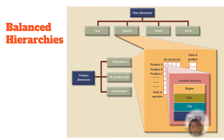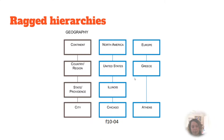For example, a year breaks down to a quarter, breaking down to months. In this example, we have a location hierarchy which breaks down to region, state, city, and store. Levels are skipped in ragged hierarchies.